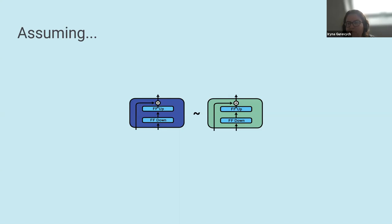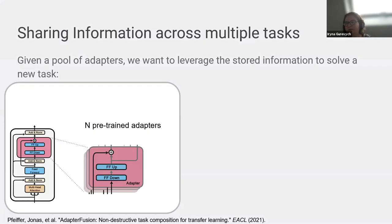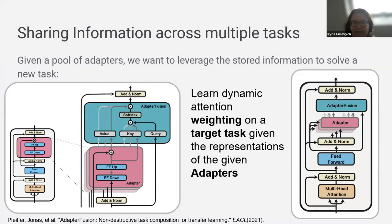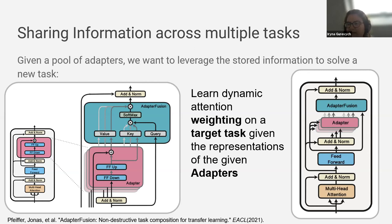Assuming that adapters are somewhat interchangeable, we propose an attention mechanism. Given a pool of adapters — for example for NLI, sentiment analysis, and commonsense reasoning — we leverage a dynamic attention mechanism which automatically learns to weight the representations of the respective adapters. We define the input to each adapter as the query, and the output as the value and key, so that the dot product of key and query learns to dynamically weight every single adapter. At each transformer layer, the model automatically identifies which adapters are most useful for the given downstream task.